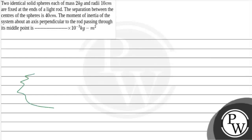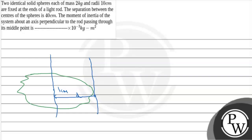Let's say this is a rigid body. The moment of inertia about an axis parallel to the one passing through the center of mass — at a distance d from the center — is i dash, which equals the moment of inertia through the center of mass plus m times d squared, where m is the mass of the rigid body. This represents the Theorem of Parallel Axes.